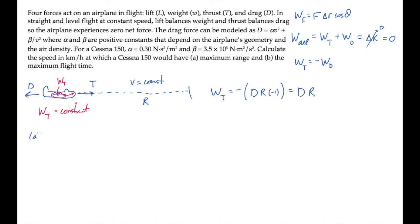And now we can solve part A, which asks us to find the speed V that maximizes the range. Because we're maximizing something, we need to take a derivative and set it equal to zero. Let's start by taking the derivative of the work done by thrust along the way with respect to V, using the product rule to get this.